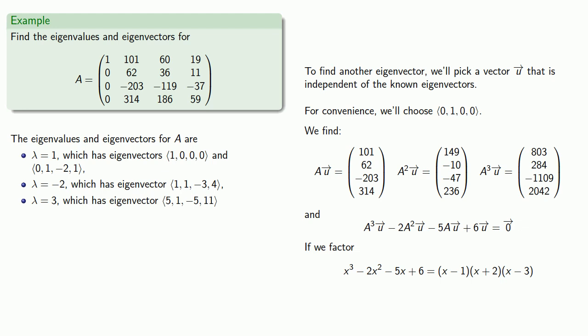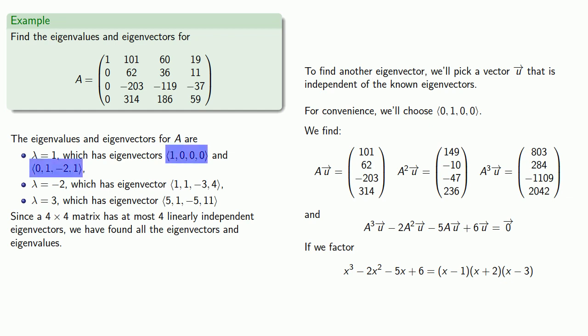And since a 4 by 4 matrix has at most 4 linearly independent eigenvectors, and we've found 1, 2, 3, 4 linearly independent eigenvectors, we've found all of the eigenvectors and all of the eigenvalues.